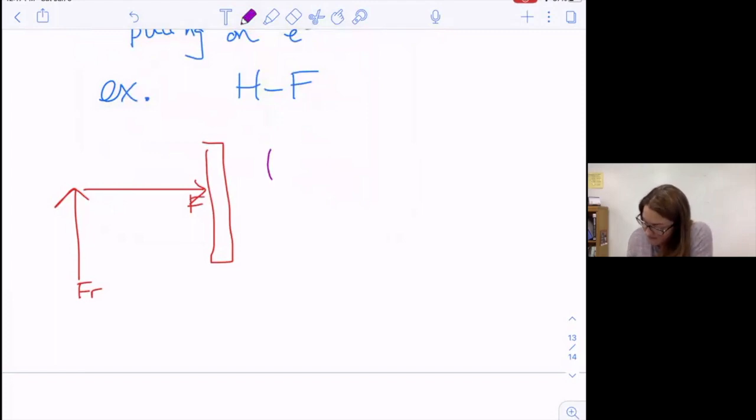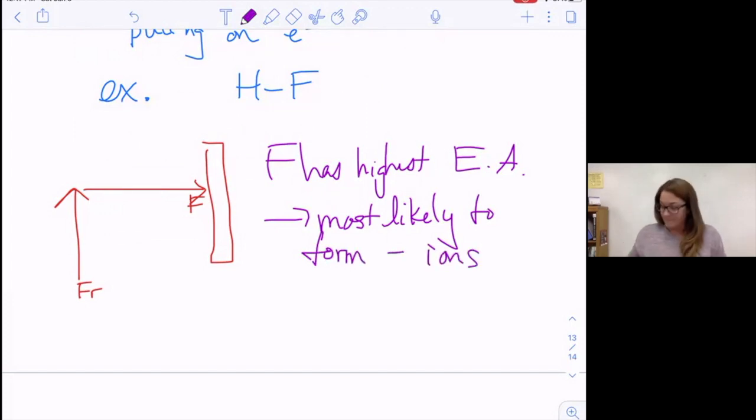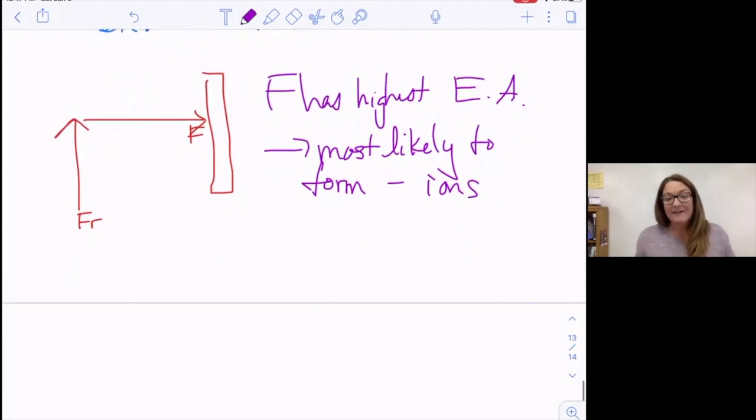F has the highest electron affinity, and that makes it most likely to form negative ions. If I ask you to make comparisons between them, you're looking at the location on the periodic table.